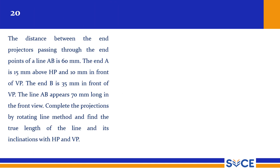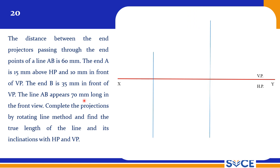This was problem 19. For problem 20: the distance between end projectors passing through the endpoints of a line AB is 60 mm. End A is 15 mm above HP and 10 mm in front of VP. End B is 35 mm in front of VP. The line AB appears 70 mm long in the front view. Complete the projections by the rotating line method and find the true length and true inclinations with HP and VP.